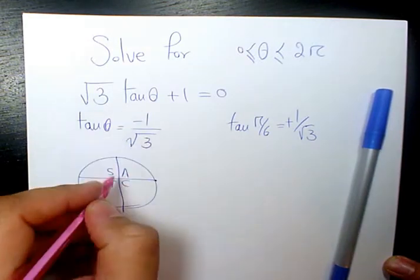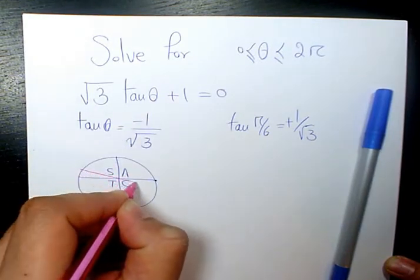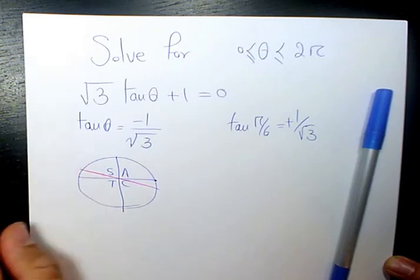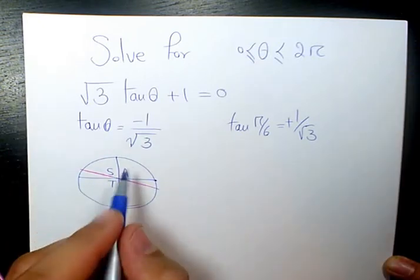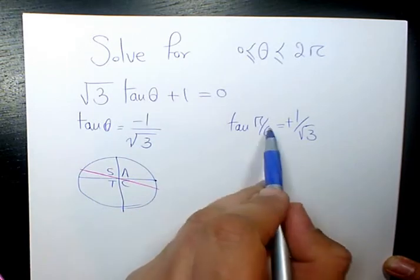In this quadrant tan is negative. Since this one is π/6, it means that this part is π/6 and this part is π/6.